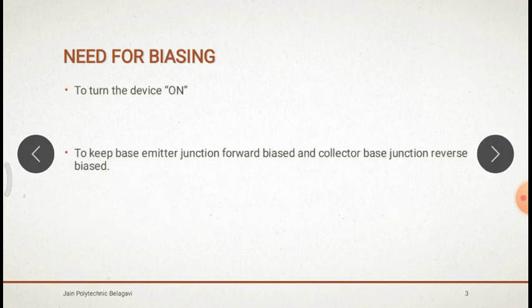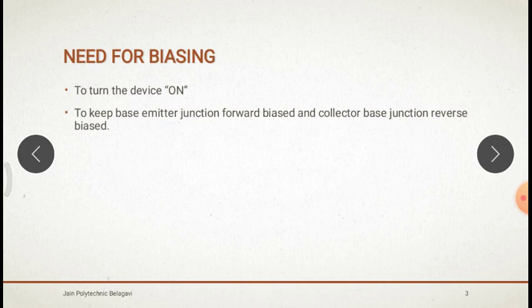Why do we need biasing? To turn the device on and to keep the base-emitter junction forward biased and the collector-base junction reverse biased. According to that, we have to connect two supplies: VBB for the emitter-base junction and VCC for the collector-base junction. The emitter-base junction should be forward biased.